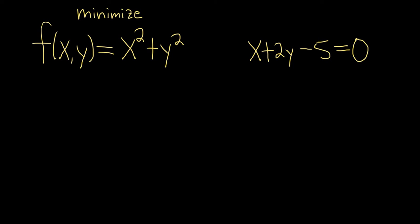Hi everyone. In this video we're going to minimize this function f(x,y) equals x squared plus y squared subject to the constraint x plus 2y minus 5 equals 0. We're going to do it using something called Lagrange multipliers.